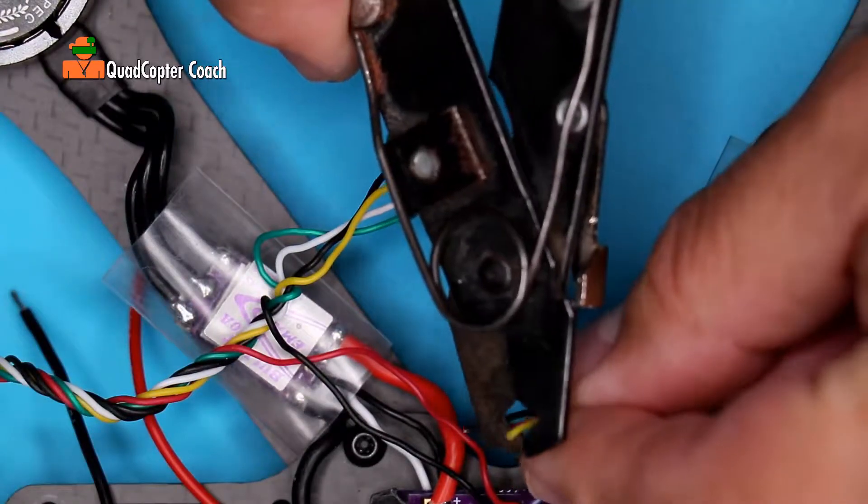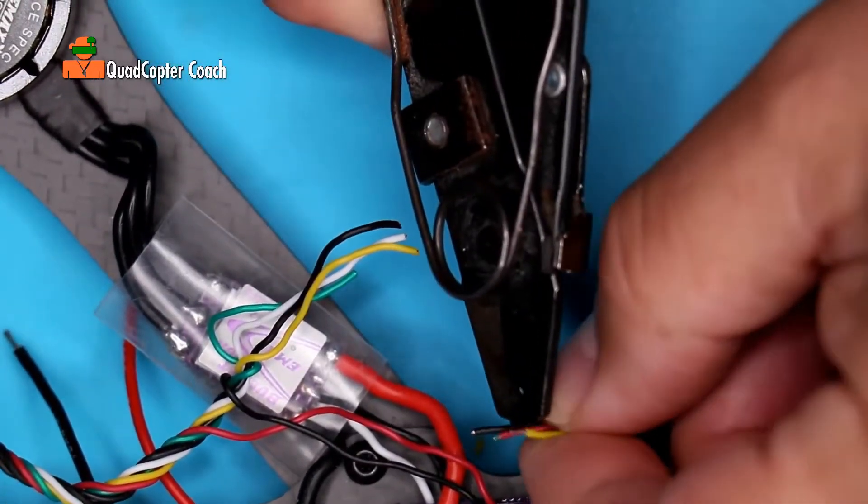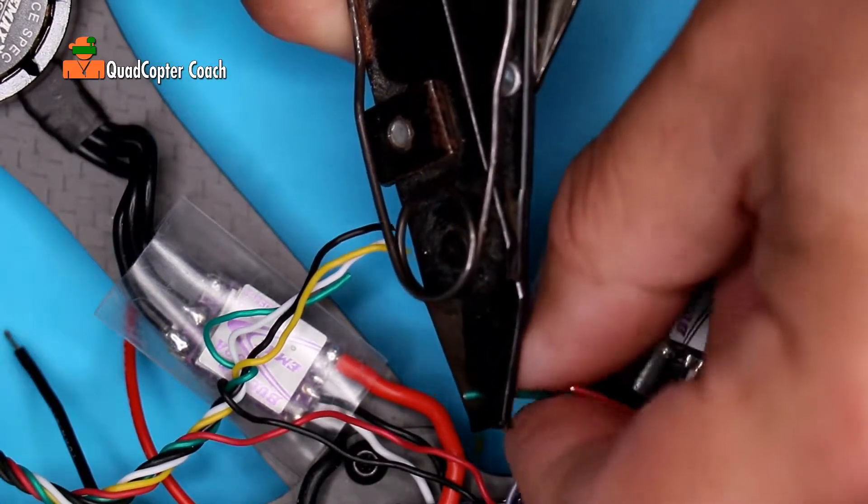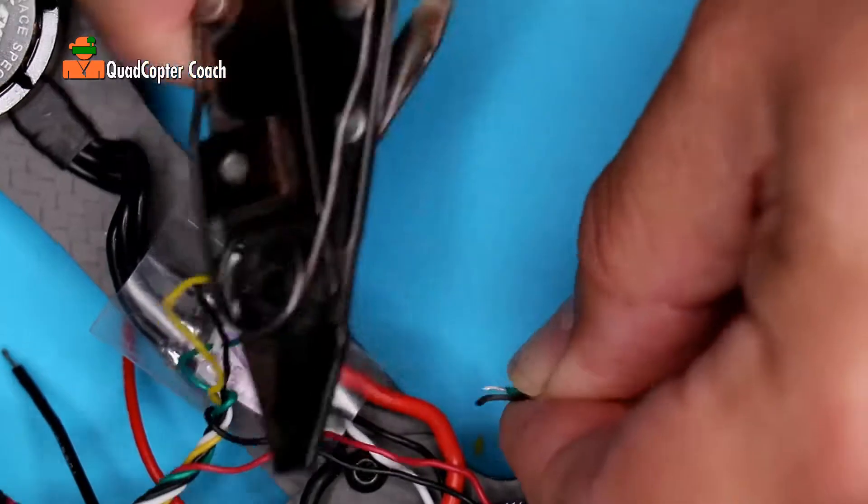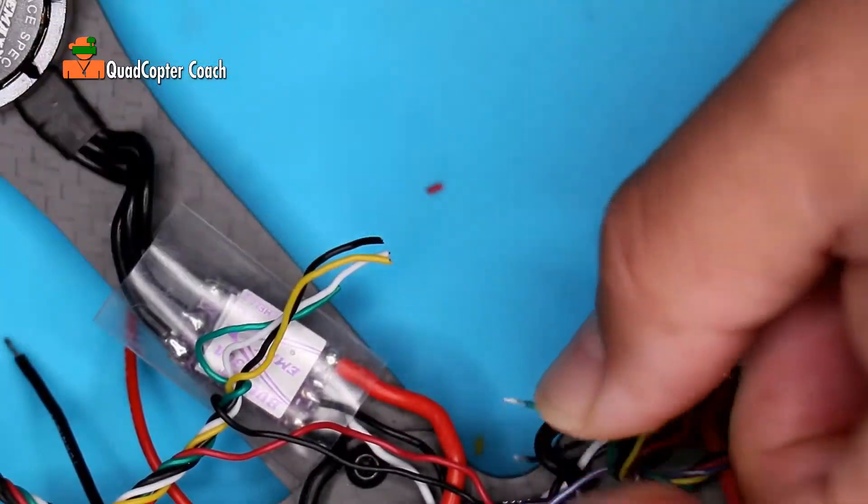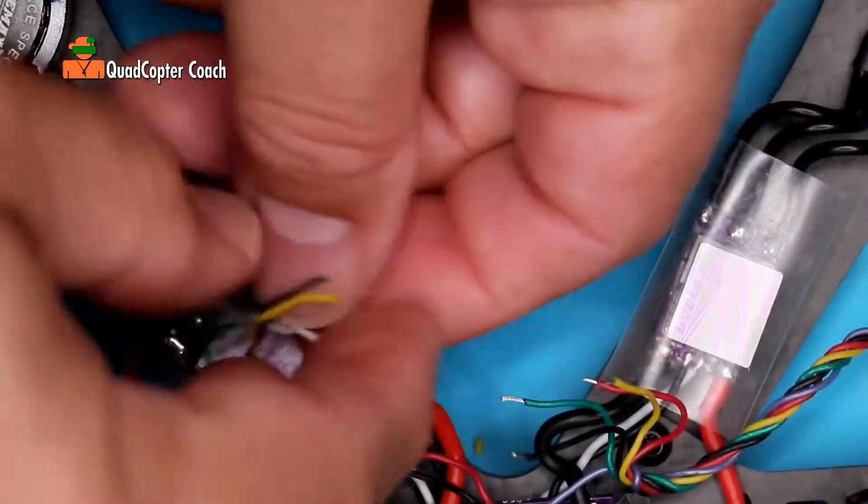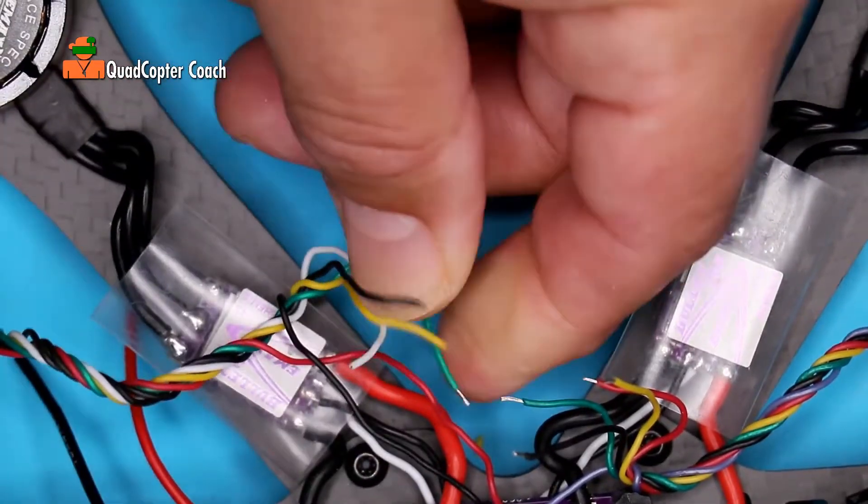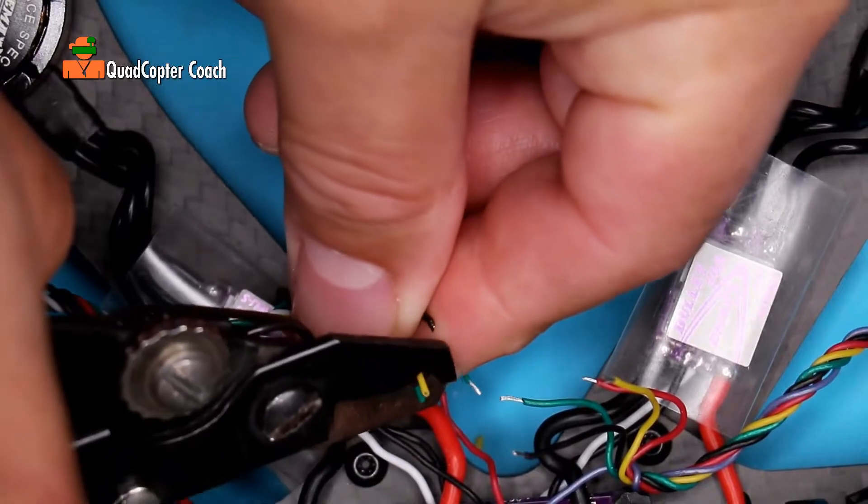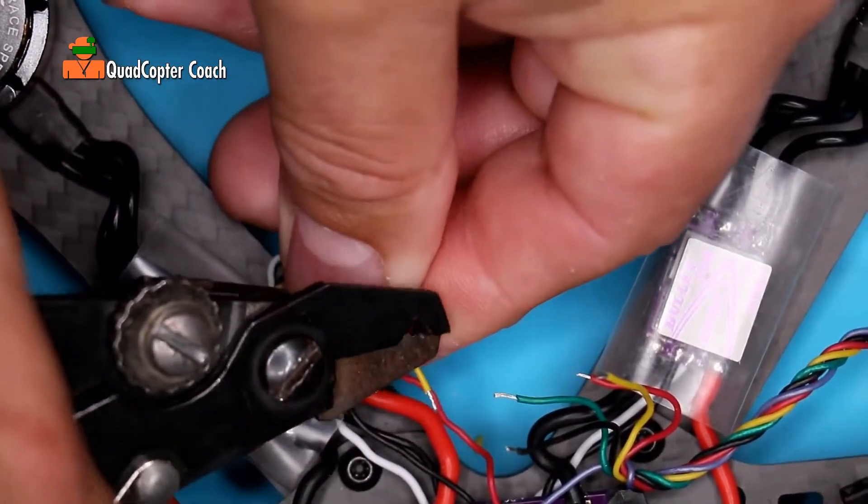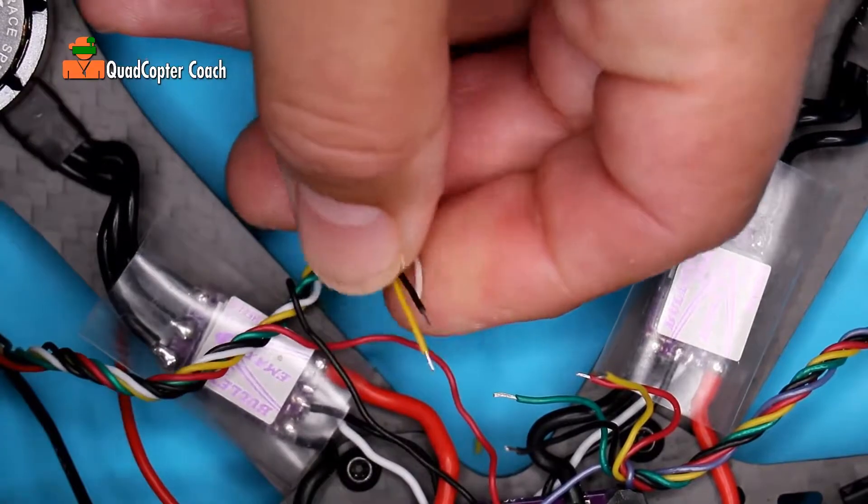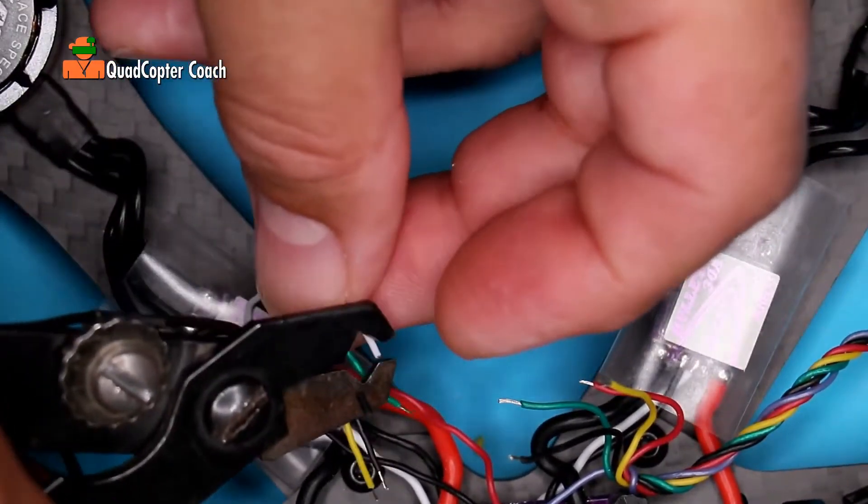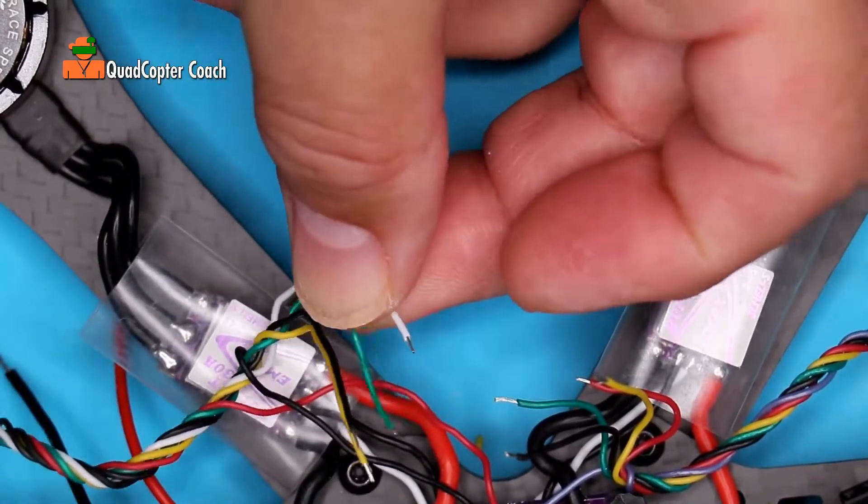We need to start stripping just a little bit off of each wire. That's good. Come back to the other side. Always strip the video transmitter wires. Some people like to use their fingernails. I prefer strippers.